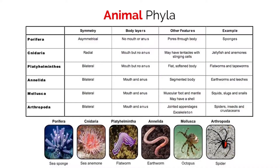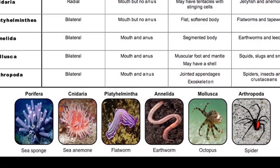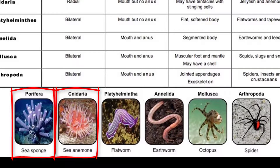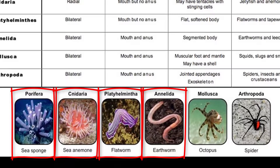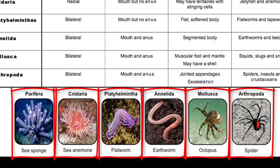Now let's look at the animal phyla. Six of the seven you need to know for the IB exam are listed here. Porifera consists of sea sponges with no symmetry and pores throughout their body. Cnidaria consists of jellyfish and sea anemones, which show radial symmetry and have a mouth. Platyhelminthes consists of flatworms and tapeworms with bilateral symmetry and flat bodies. Annelida consists of earthworms and leeches with bilateral symmetry and a soft, segmented body. Mollusca includes squids, slugs, and snails, which have bilateral symmetry and contain a muscular foot and mantle, some with shells. Arthropoda consists of spiders and insects with bilateral symmetry and jointed appendages based around an exoskeleton.